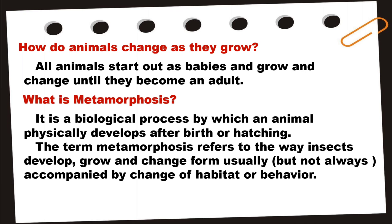On the other hand, incomplete metamorphosis refers to a type of insect development where gradual changes occur in the insect during development from egg to adult. It consists of three stages: egg, nymph, and adult.